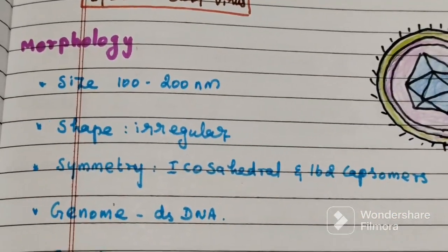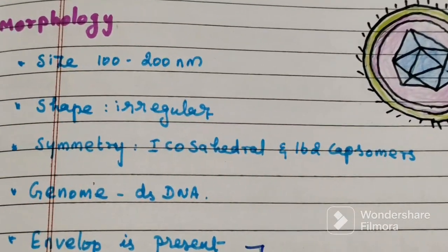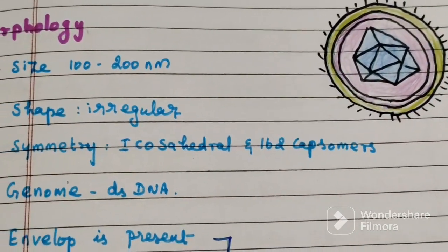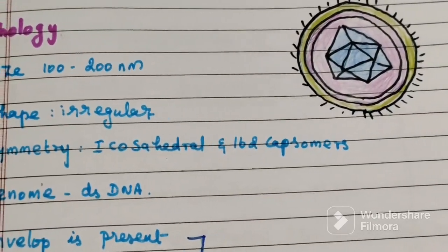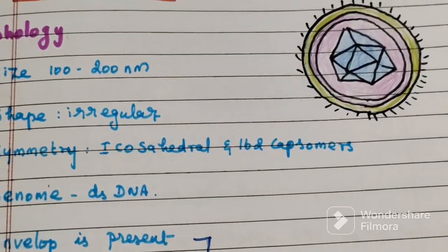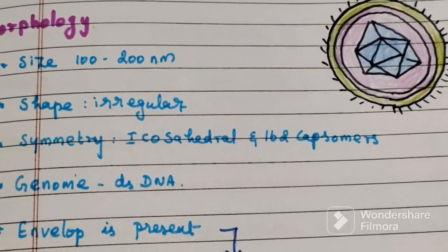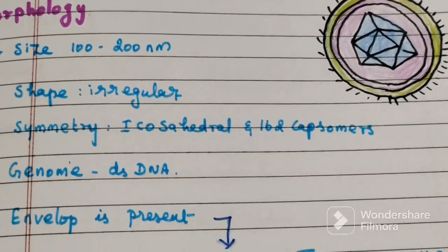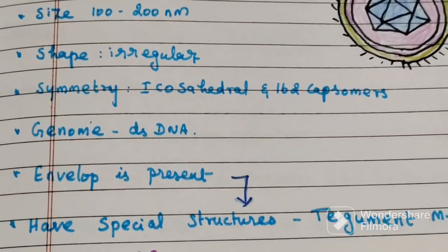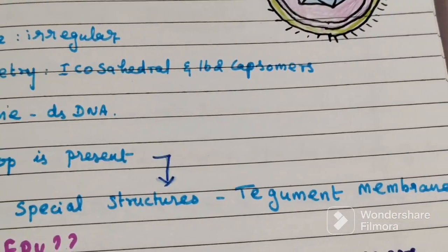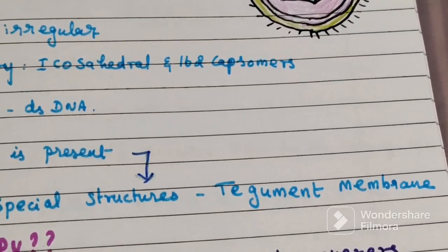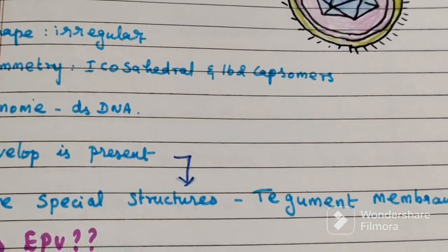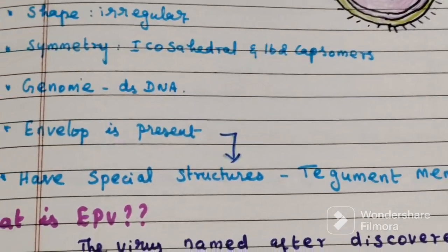Morphology of Epstein-Barr virus: size is 100 to 200 nanometers, shape is irregular, symmetry is icosahedral, and it has 162 capsomers. The genome is double-stranded DNA. An envelope is also present, and it has a special structure called the tegument membrane.